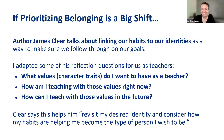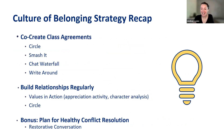Let's recap the strategies we learned today. We talked about co-creating class agreements with four approaches: circle, smash it, chat waterfall, and write around — plus fists to five for consensus building. We talked about building relationships regularly through values in action and the circle activity. And we talked about a bonus plan for healthy conflict resolution through restorative conversation.